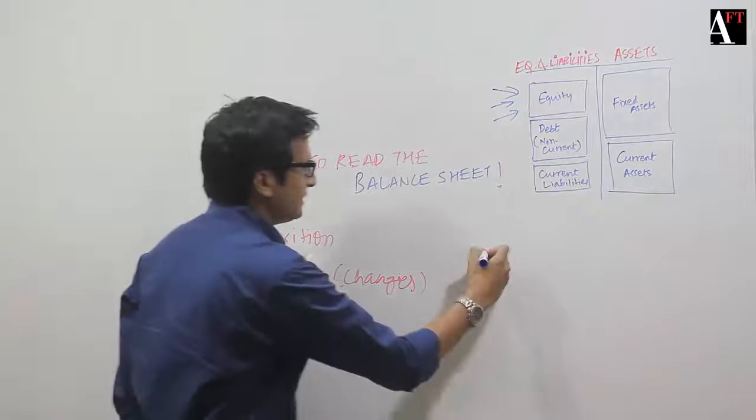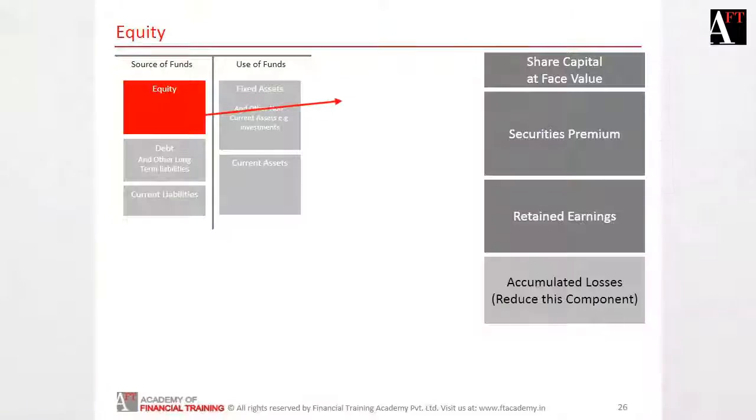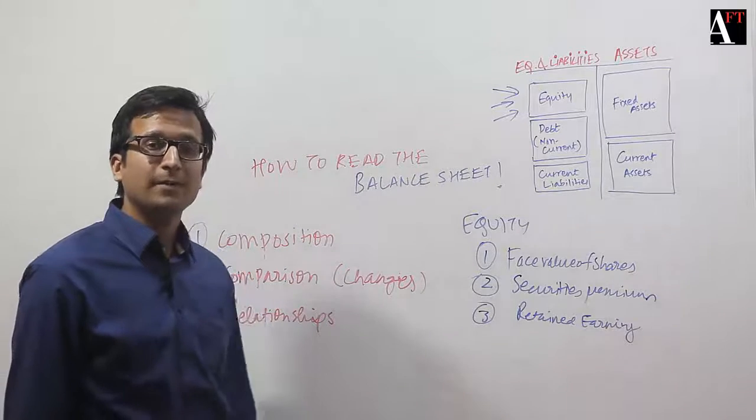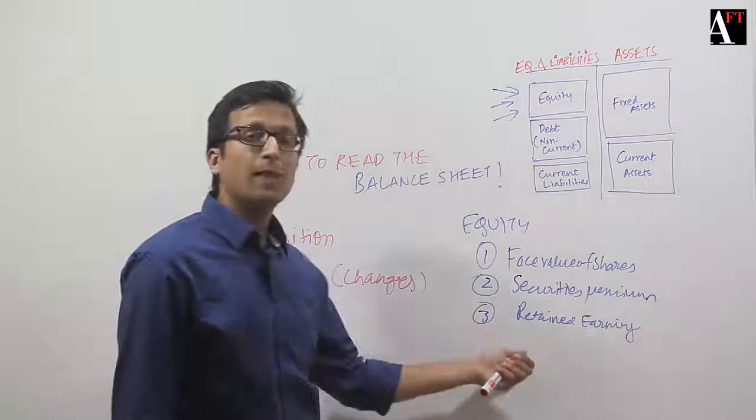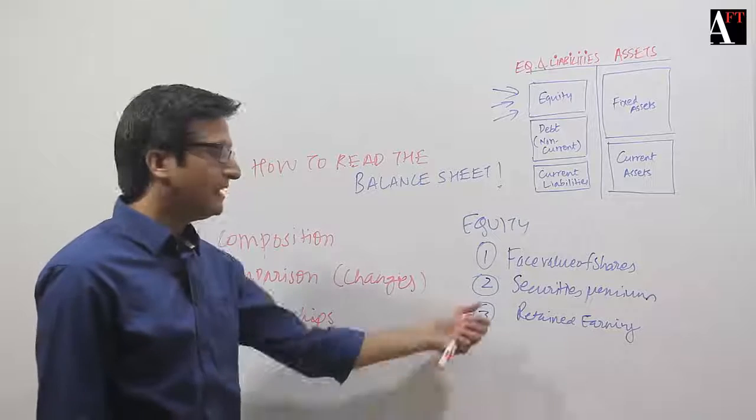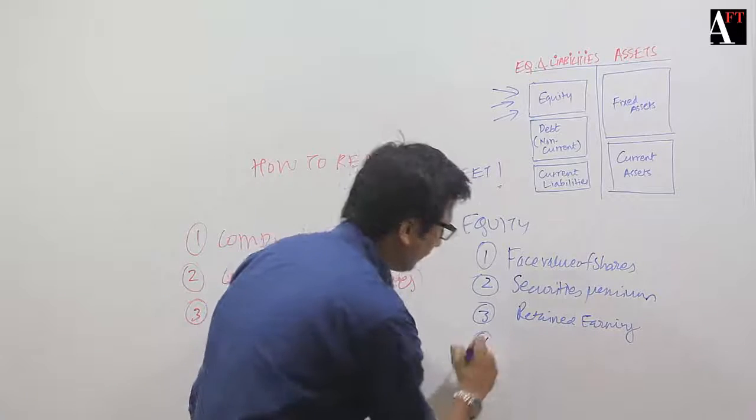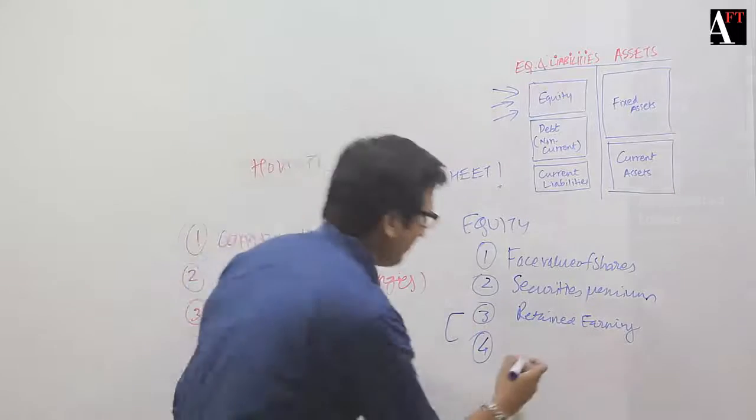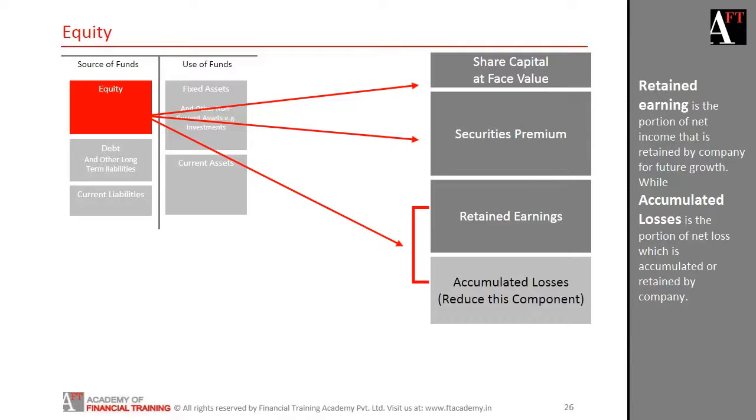How much is the equity in the form of face value of shares? How much is the securities premium? How much is the retained earnings? That is the historical profits earned by the company which have been plowed back in the business, which have been retained in the business. Or there could be a fourth component which is accumulated losses.